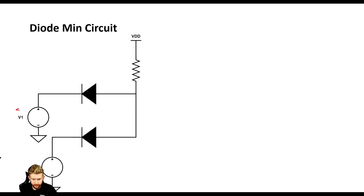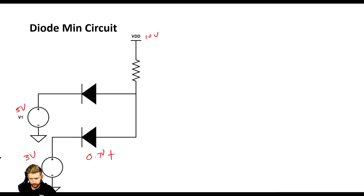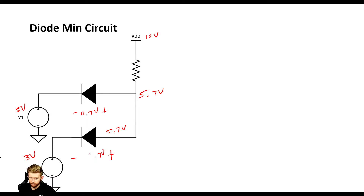Let's try the same example: V1 is 5 volts, V2 is 3 volts, and VDD is 10 volts. If V1's diode has a 0.7 volt forward drop, that gives 5.7 volts at the output node. That means the V2 diode would have a 2.7 volt forward drop, implying tens of amps of current — which is not realistic. So something fishy is happening and maybe it's not 5.7 volts appearing at the output.